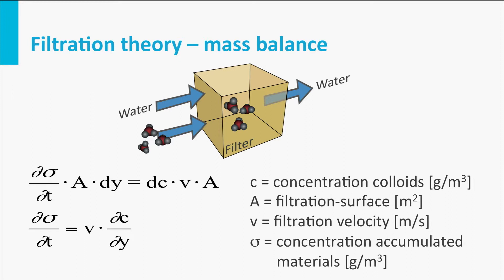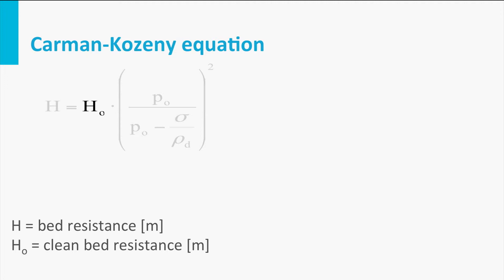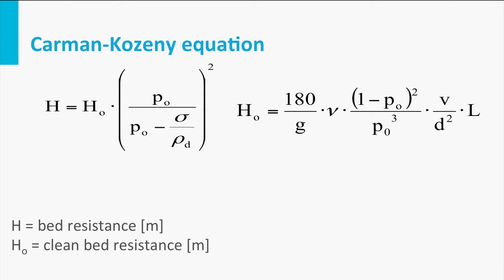Based on the accumulation of solids in the bed and the clean bed resistance, the bed resistance of a clogged filter can be calculated. The clean bed resistance is determined by the famous Carmen-Kozeny equation, giving a relation between the resistance and the filtration velocity, the porosity, the grain size, the viscosity, and the filter bed height.